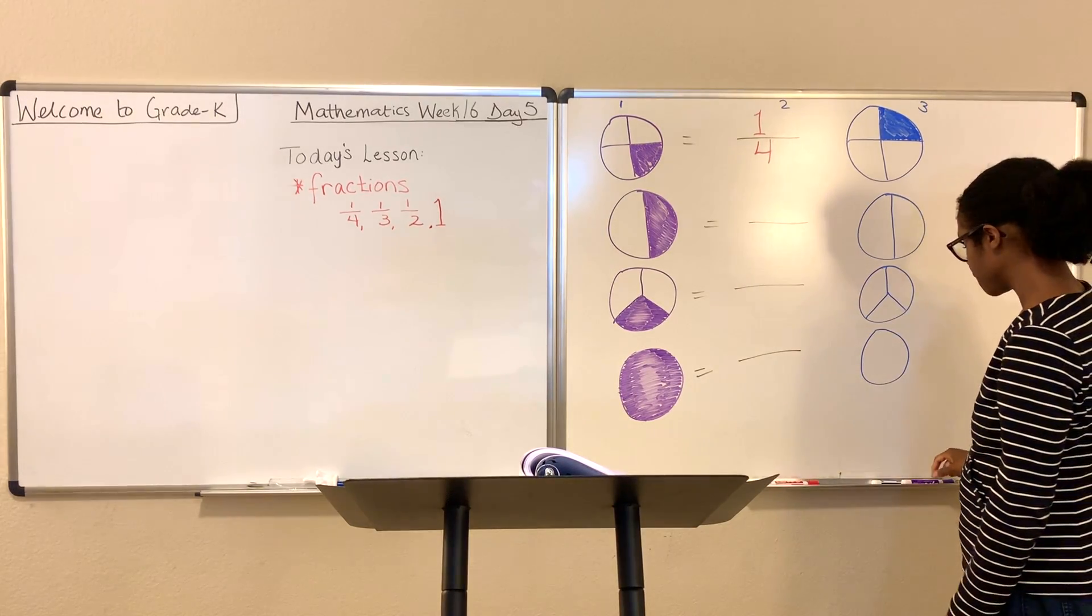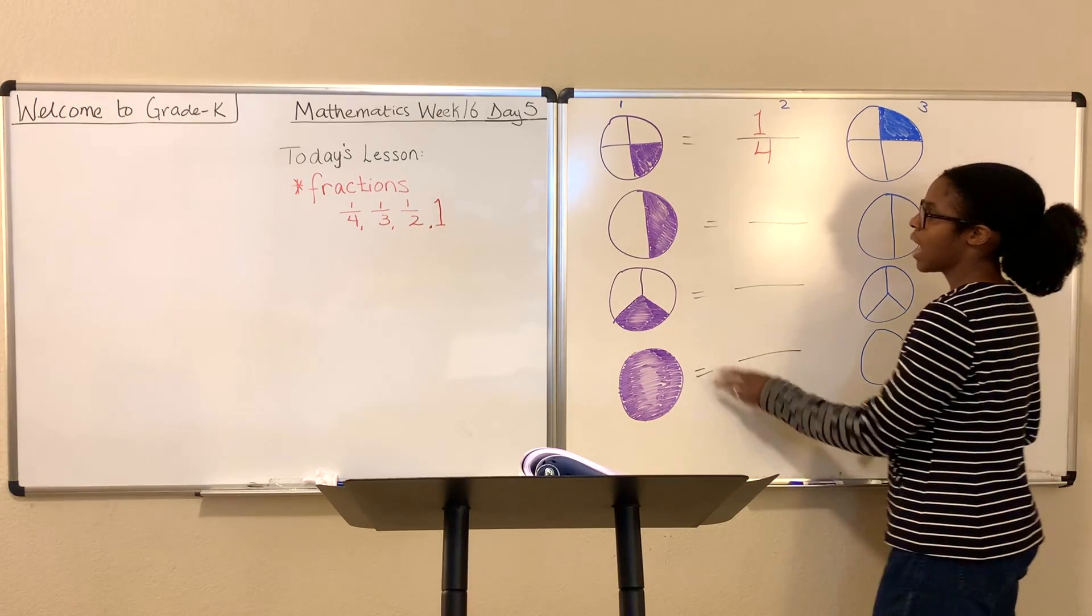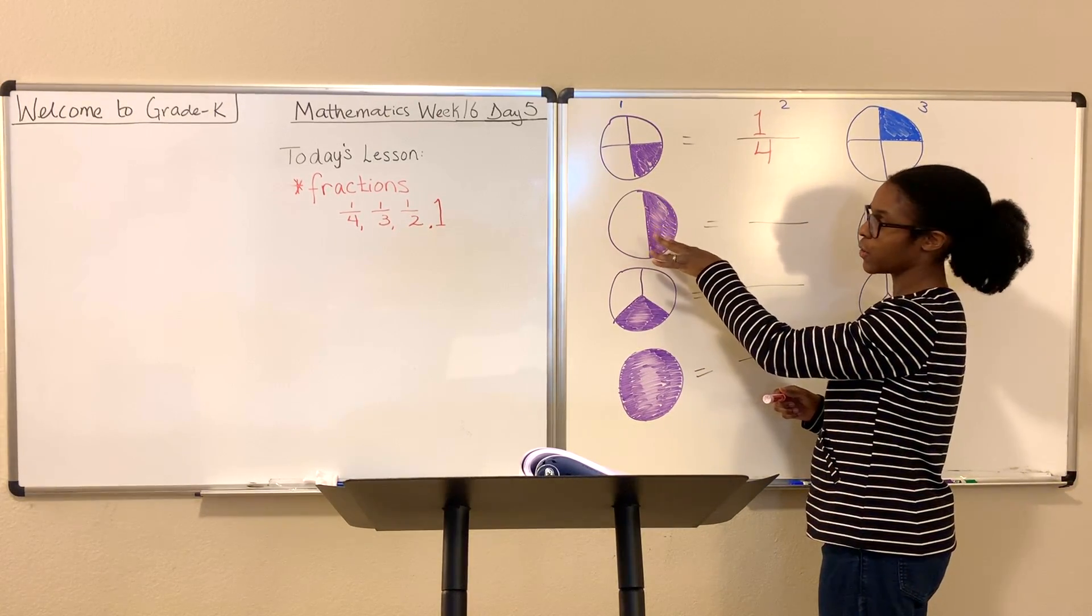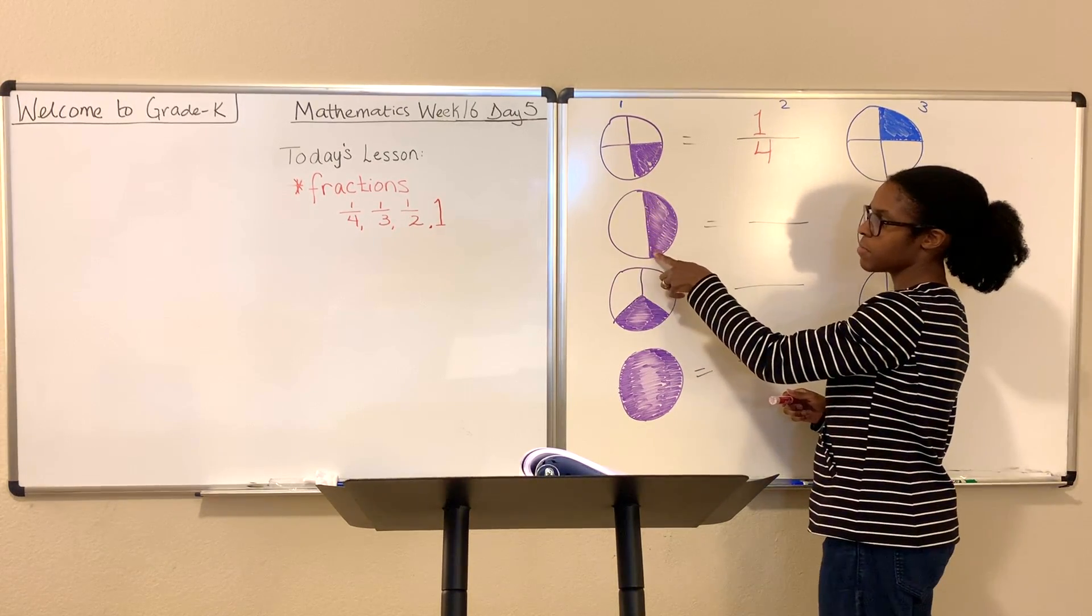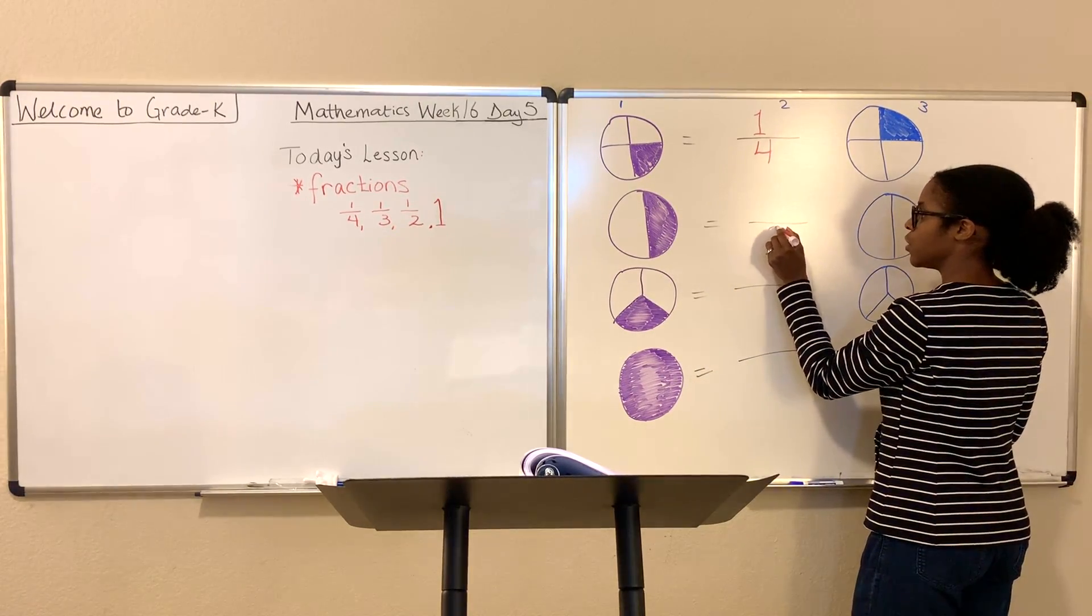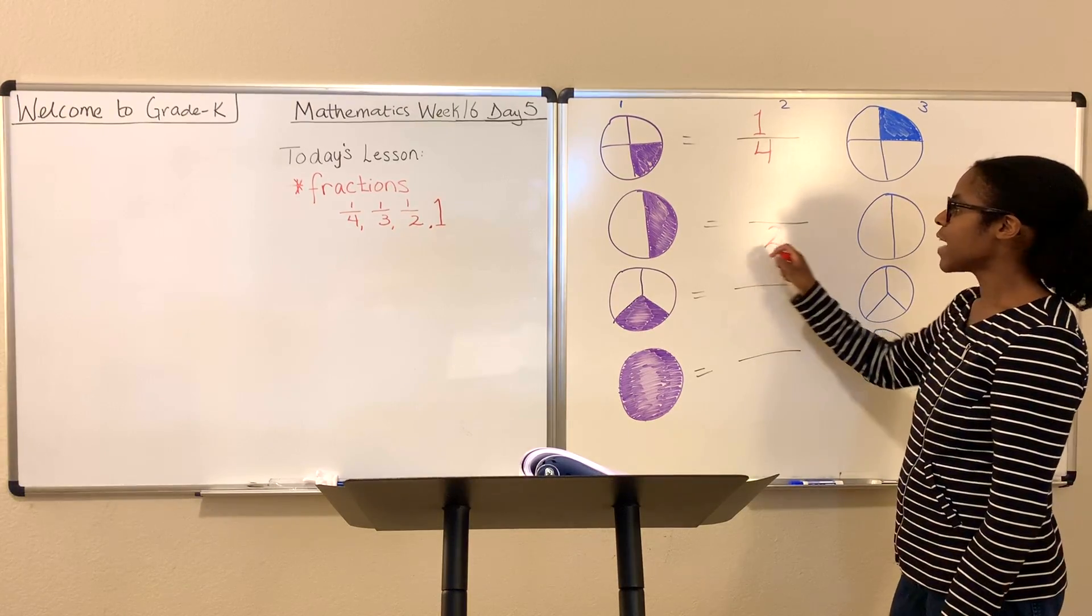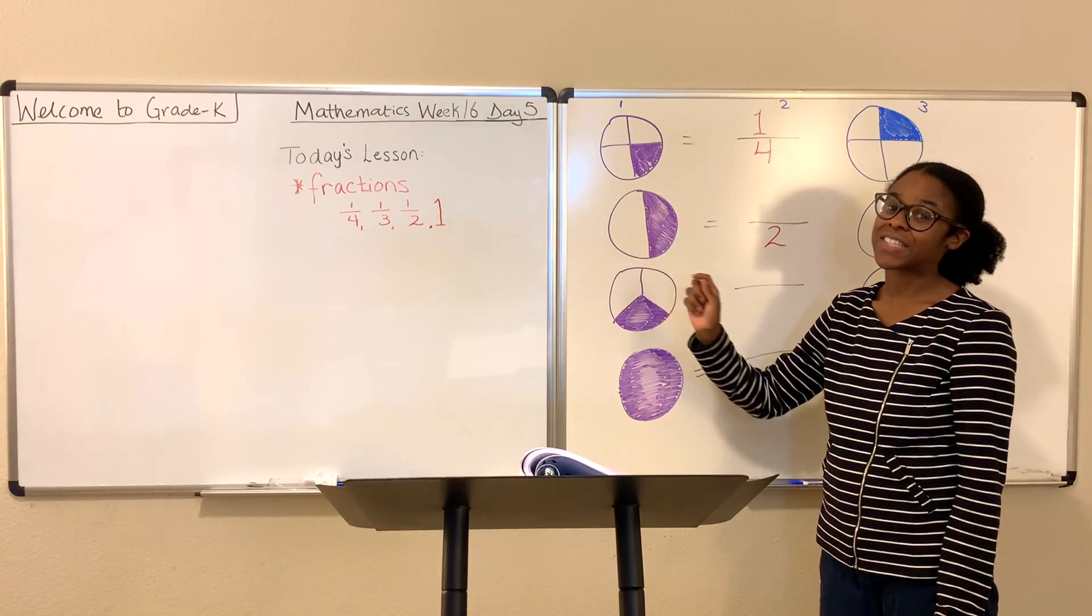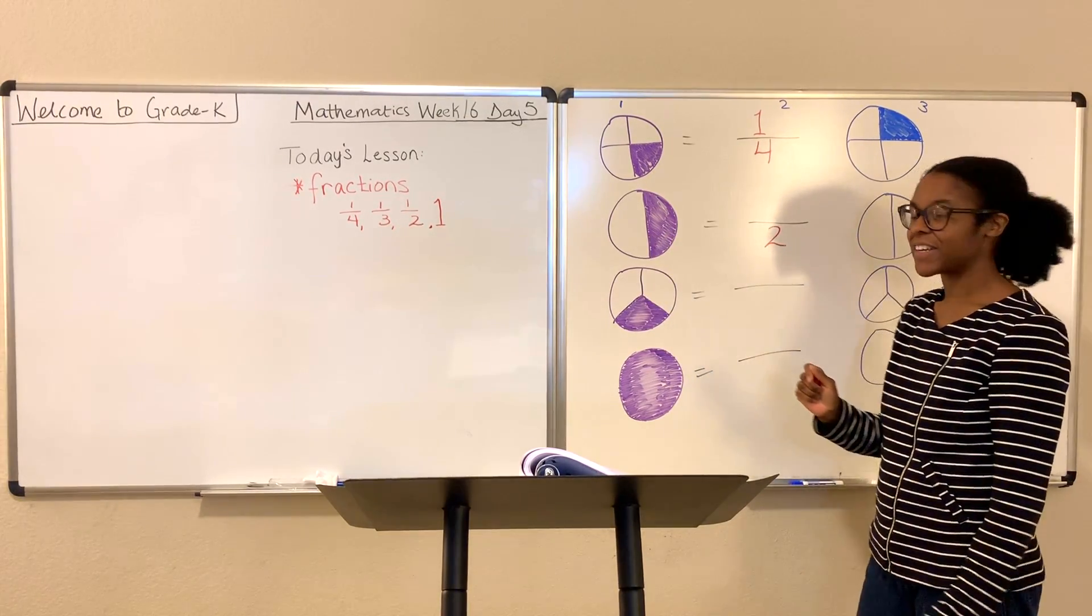Now we're going to move on to part 2, or the second fraction. You see here, how many parts have we divided the circle into? Well, you can just count. 1, 2. There's a line right there in the middle. This is divided into 2 parts, so we're going to write that down. You can write it down on your paper as well. We divided this circle into 2 parts. My second question, how many parts are shaded?